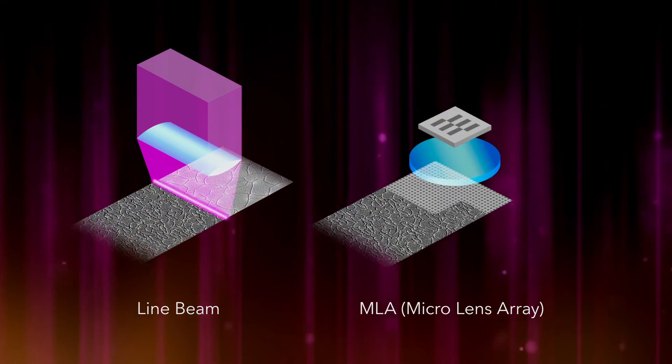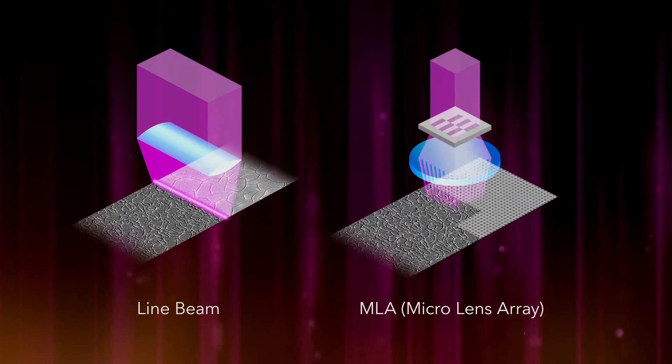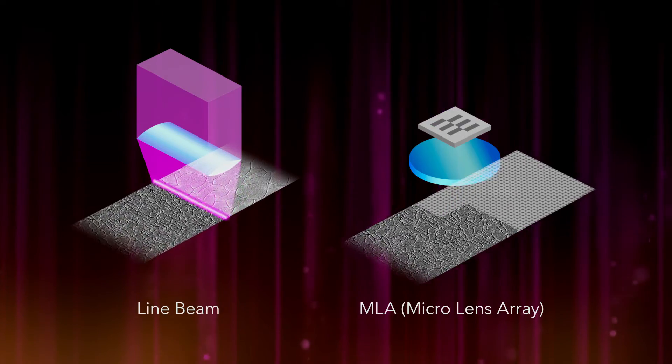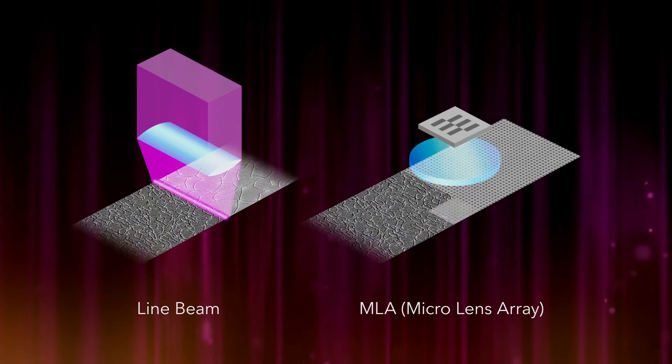GigaPhoton's Eximer Laser is applicable as a light source for the MLA-type laser annealing method which enables the manufacture of larger-sized, high-definition LCD and OLED displays.